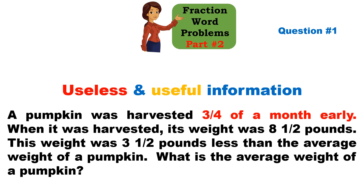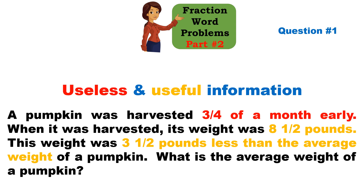How early the pumpkin was harvested is useless information. We've identified that and highlighted it in red. Now turning our attention to the useful information: when it was harvested its weight was eight and a half pounds — that is useful. This weight was three and a half pounds less than the average weight — that is also useful. We highlight those in gold. So useless information is in red and useful information is in gold.